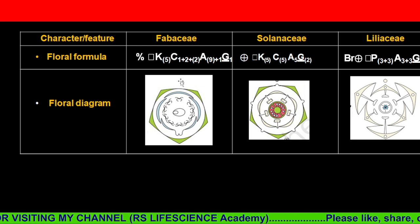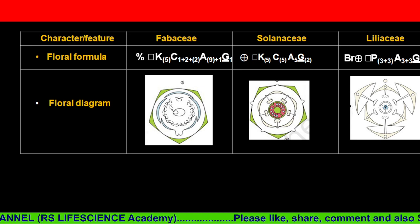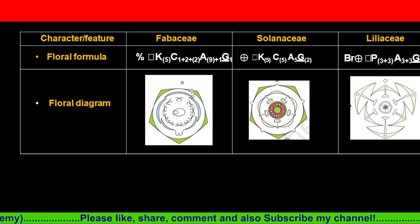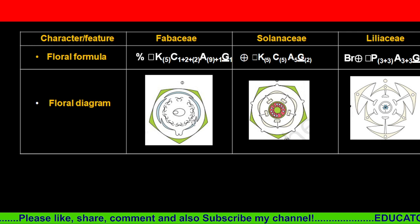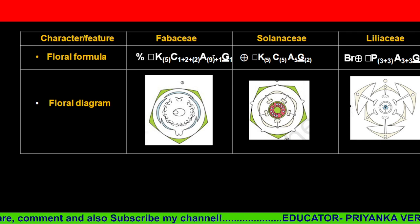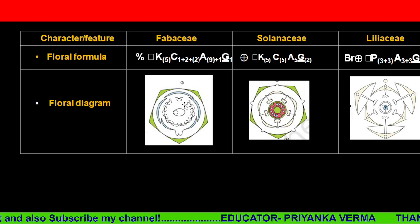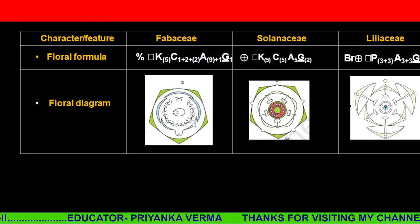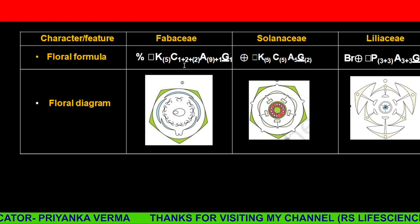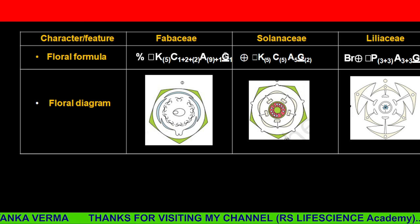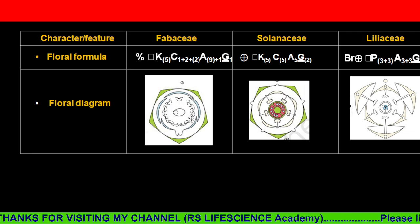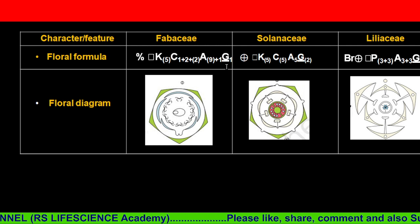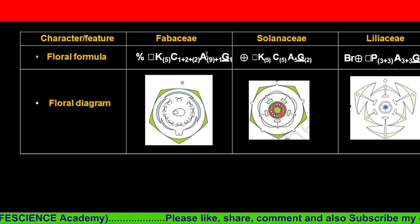How many corollas are in Fabaceae? One is a single petal and it is completely different; the other ones are united. So that means one plus two plus two. Androsium is nine plus one — nine are united and one is free. The corolla arrangement is one plus two plus two. There is one ovule present, and this is a superior ovary. This is the floral formula for Fabaceae.